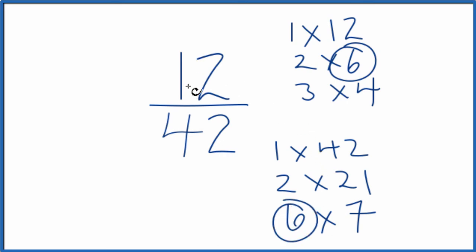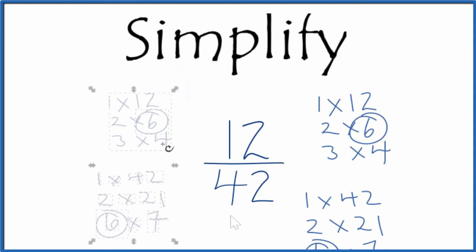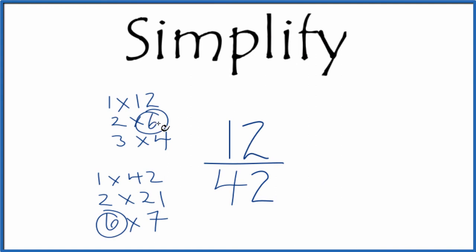So we'll divide 12 by 6 and 42 by 6, and we'll simplify the fraction. Let's move these over here. We divide 12 by 6, we get two, and then we divide 42 by 6, and we get seven.